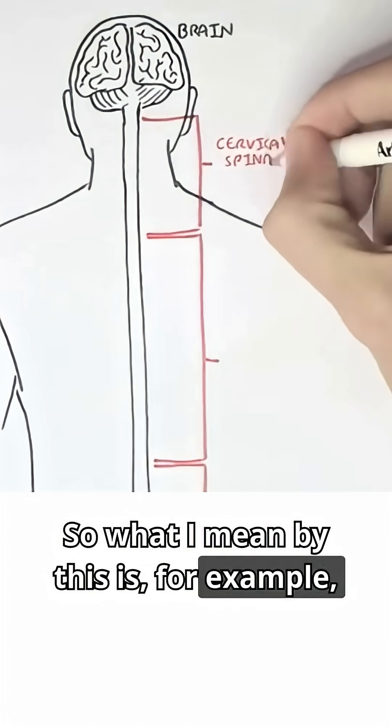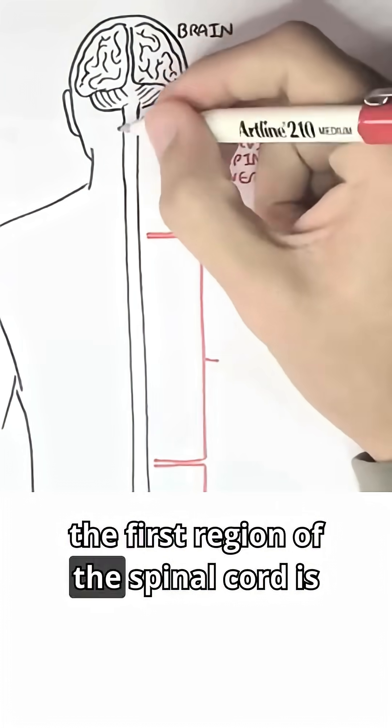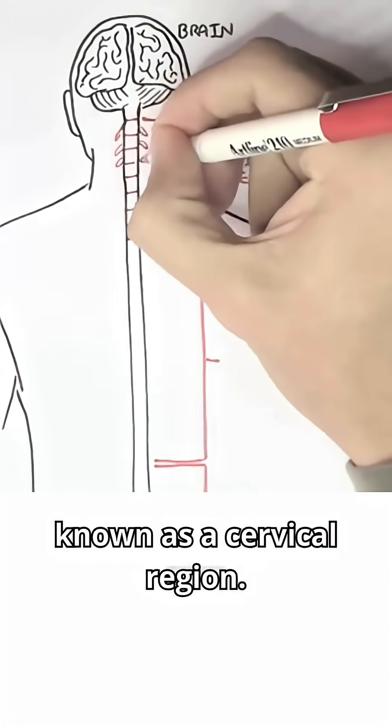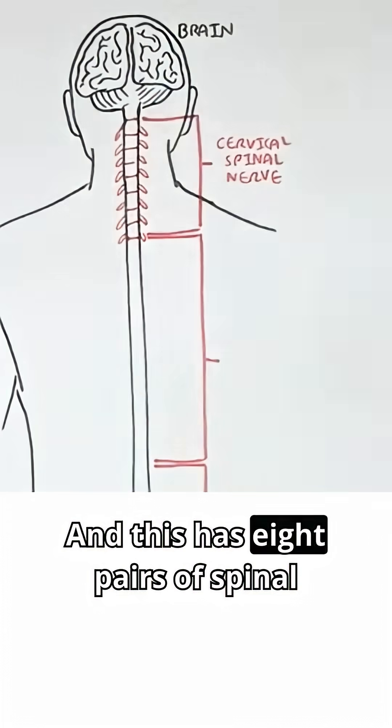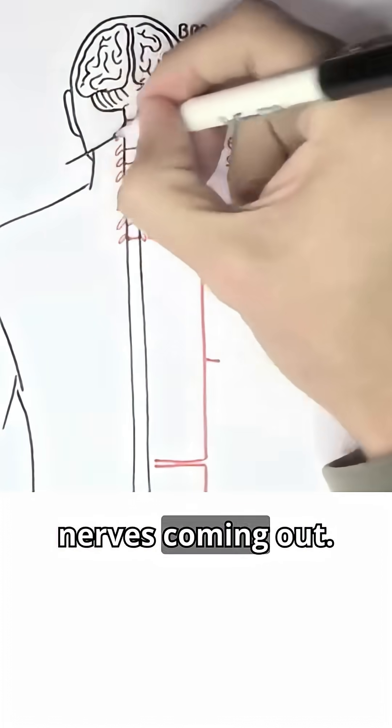So what I mean by this is, for example, the first region of the spinal cord is known as the cervical region and this has eight pairs of spinal nerves coming out.